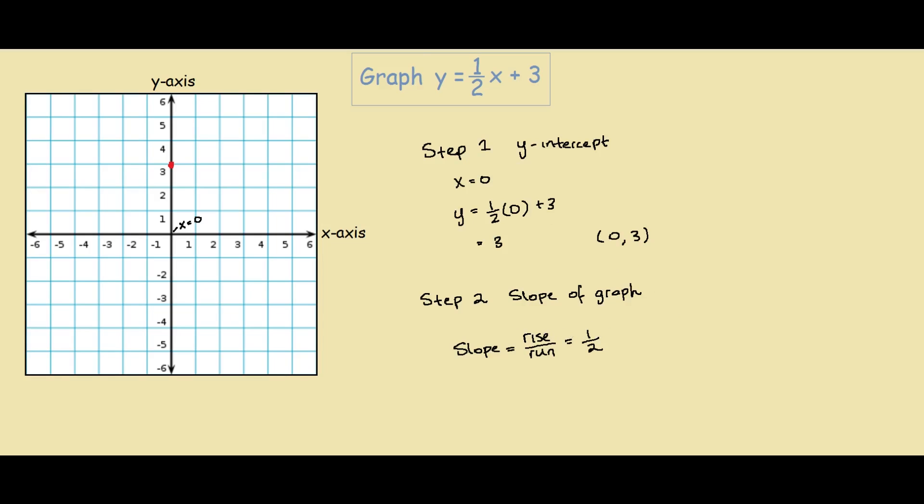What this means is that for every one unit you go horizontal, you go up one-half. So our next points would be here and here.